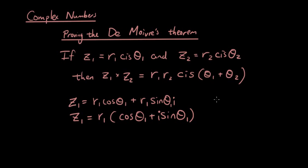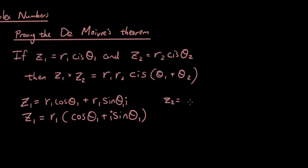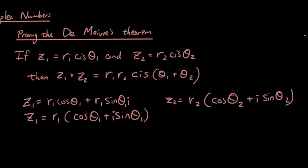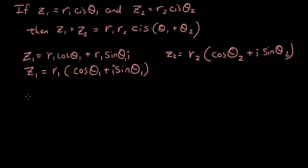Now I'm going to do the same thing with z2. So z2 is r2 bracket cos θ2 plus i sin θ2. If you have no idea how r2 cis θ2 is equal to this, then you probably have to look at some of my other complex number tutorials.